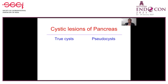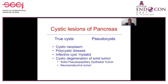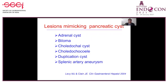The cystic lesions can either be true cysts or pseudocysts in the pancreas. True cysts include cystic neoplasms, polycystic disease, infective cysts such as hydatid, or cystic degeneration of solid tumors — most commonly GIST or sometimes neuroendocrine tumors. But more commonly than true cysts, we see pseudocysts of the pancreas following acute and chronic pancreatitis. There are some other lesions which mimic pancreatic cysts, including adrenal cyst, bilioma, choledochal cyst, duplication cyst, or sometimes even an aneurysm.